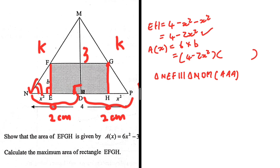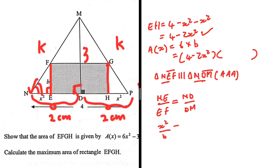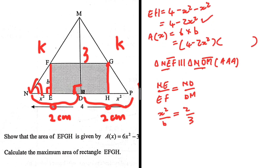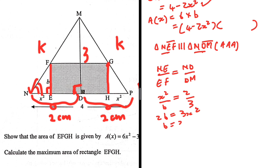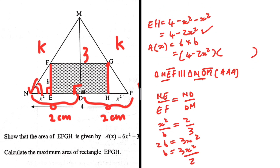Since the two triangles are similar, NE/EF = ND/DM. NE = x², EF = b (the breadth we're looking for), ND = 2 centimeters, and DM = 3 centimeters. So x²/b = 2/3, giving 2b = 3x², therefore b = 3x²/2.